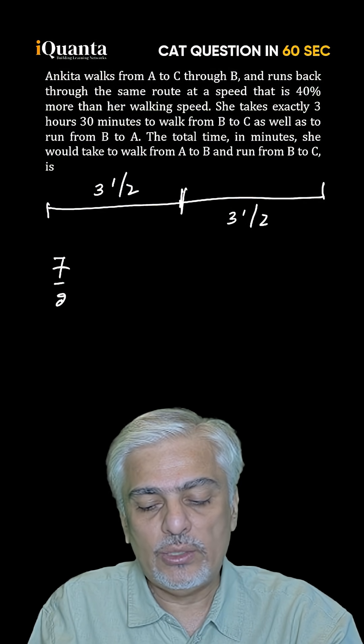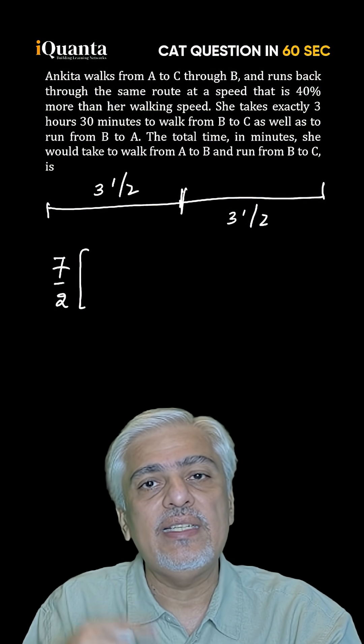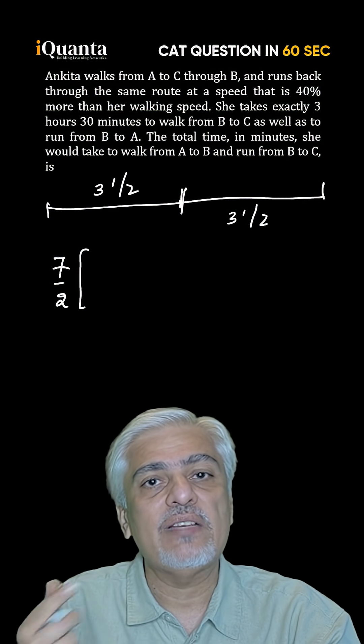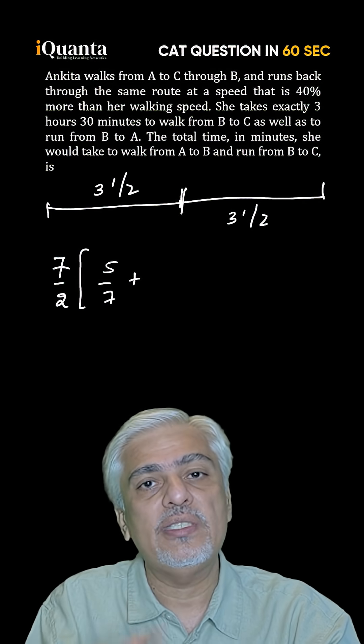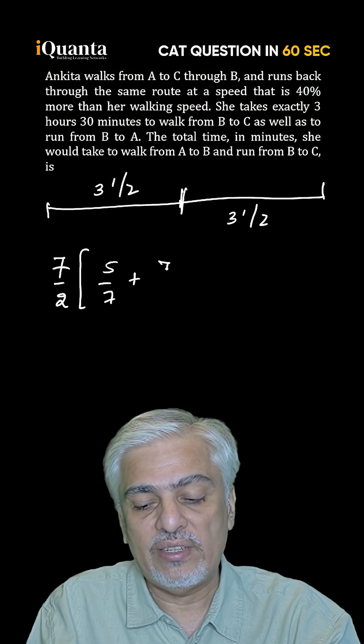Three and a half hours is seven by two. Now when your speed increases by 40% it becomes seven by five, so time reduces to five by seven and exact opposite once the time will go to seven by five.